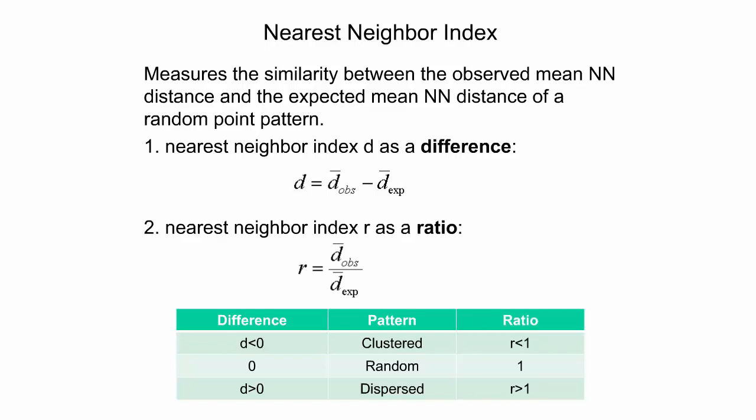An alternative way of computing the index is to calculate the ratio of the observed mean over the expected mean. With a ratio of 1, the observed point pattern can be considered random. A ratio below 1 indicates a clustered point pattern, while a ratio above 1 indicates a dispersed point pattern.